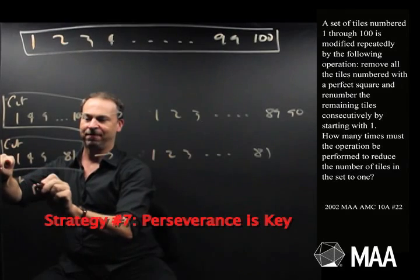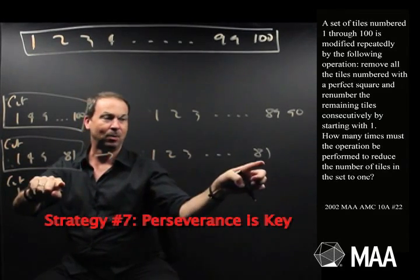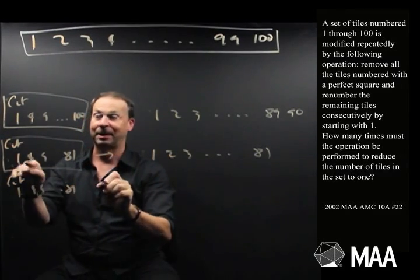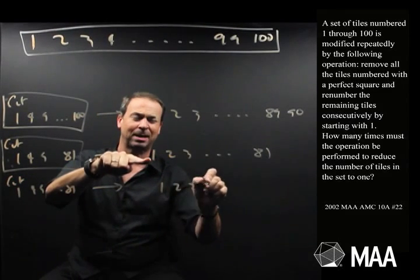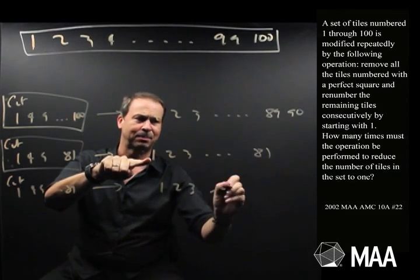81 tiles, which means I cut 1, 4, 9, 16, up to 81. 81's up there. So I cut another 9 tiles. Leaves me with 9 less. That's up to 72.